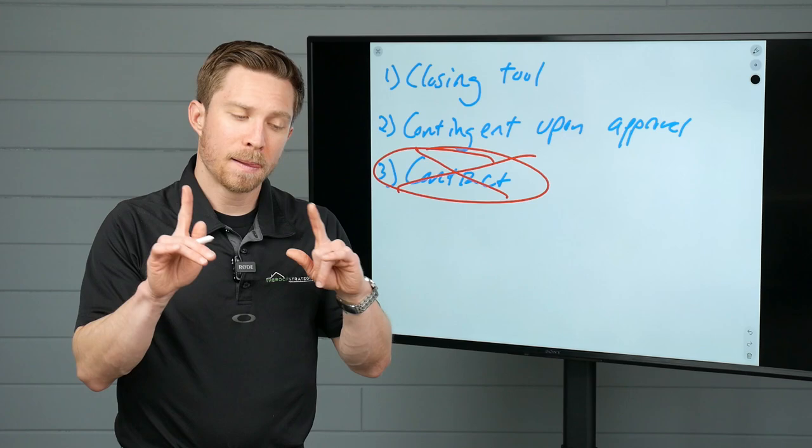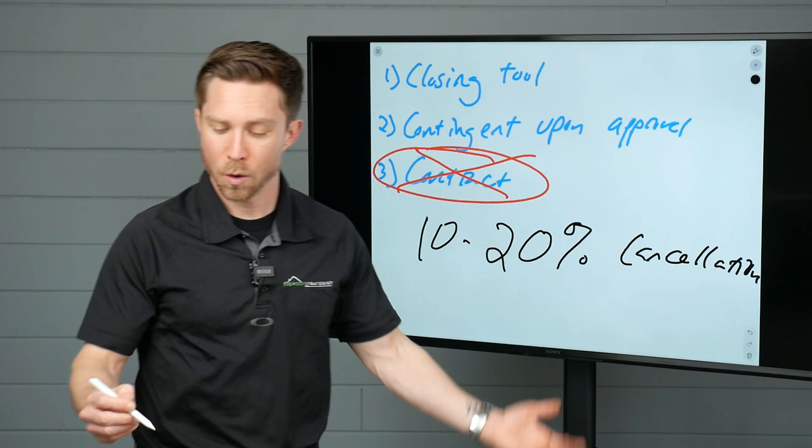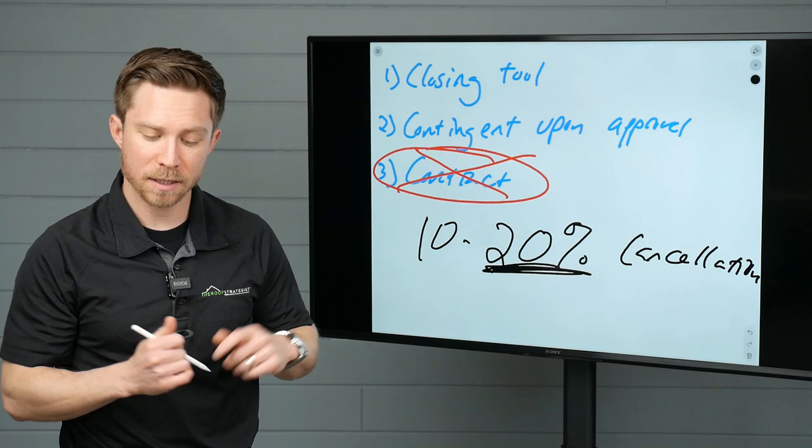So, here's where it gets interesting. Most people on their contingency agreement have a 10 to 20% cancellation, meaning let's say we get the insurance company approved for a $10,000 roof. We have a 20% cancellation if you decide to work with someone else that's on the fine print on the back or on the front. And if you back out, you owe us $2,000.